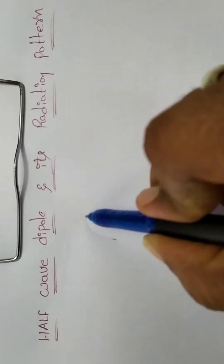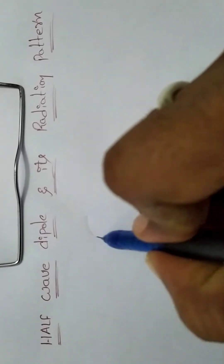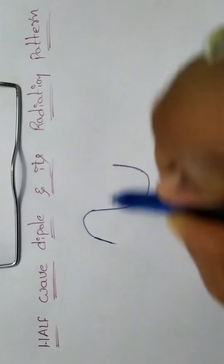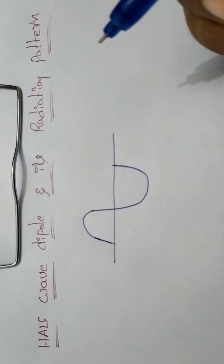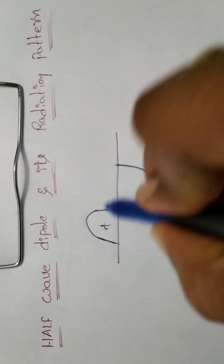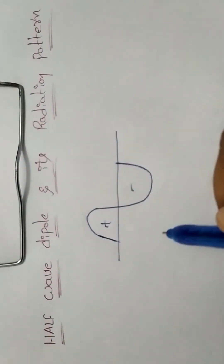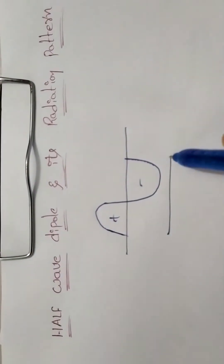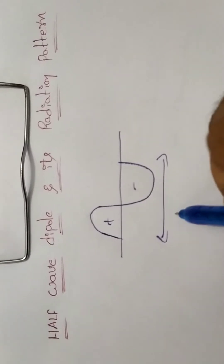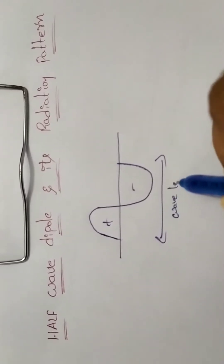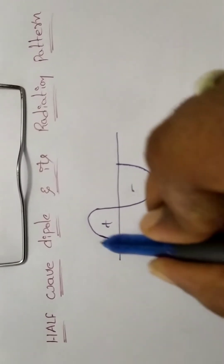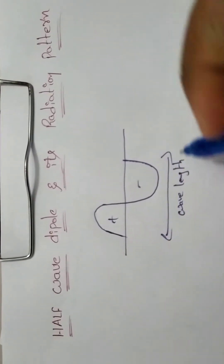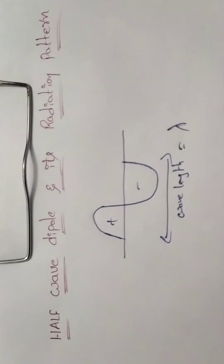This is a complete cycle of positive and negative. This is a wavelength. This is a lambda — lambda and wavelength refer to the same thing.